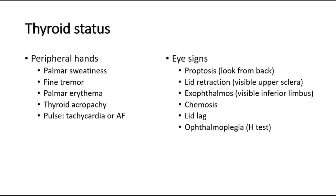After the examination of the thyroid gland, we move on to examination of the thyroid status. We check the peripheral hands and look for signs of thyroid toxicosis such as palmar sweating, fine tremor of the hands — detected by asking the patient to hold their hands out and placing a paper on them — palmar erythema, thyroid acropachy, and also check the pulse for tachycardia or atrial fibrillation with an irregularly irregular pulse.